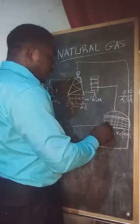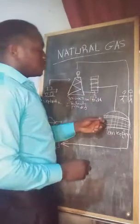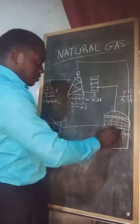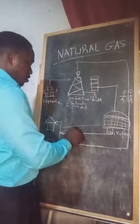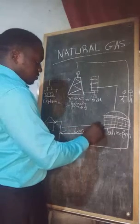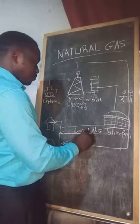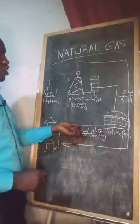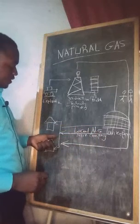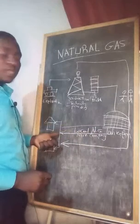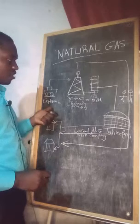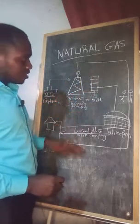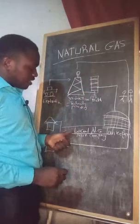If you have enough money and land, you can build your storage tanks and wait for people to come and store their natural gas there. Or you can launch a local natural gas marketing company. If you have a local natural gas marketing company, it means you buy the gas right from the tank farm and sell it to end-use consumers. In Africa, this is most common because very few countries pipe gas directly into homes as in some European countries.